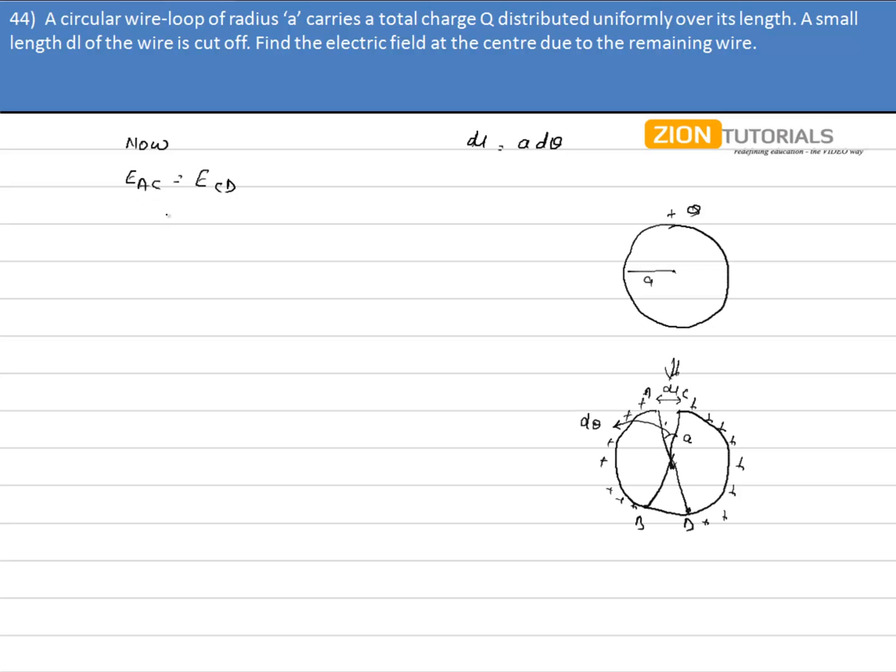So, the net electric field that will be at the center will be only due to the part BD. Because, there is no length AC to compensate the net electric field produced by arc BD. So, the net electric field at center will be due to BD arc.